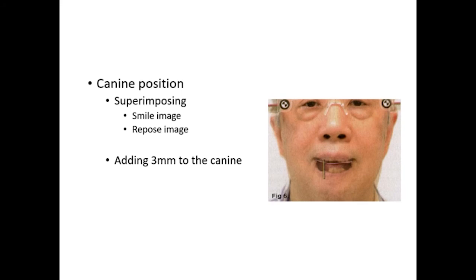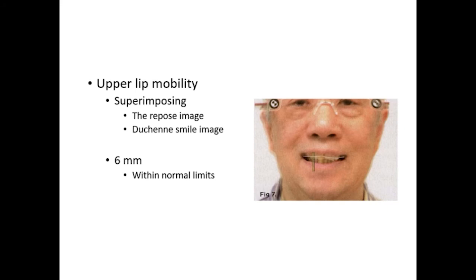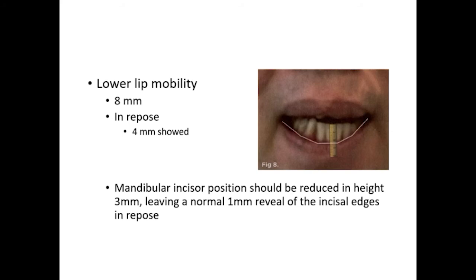Adding 3 mm to the canine would provide an appropriate aesthetic result. The upper lip mobility was measured by superimposing the repose and the U-chain smile photographs and was found to be 6 mm, which is within normal limits. The clinician used video recording of the patient speaking and captured a screenshot with maximum incisal display. Lower lip mobility was measured at 8 mm. The mandibular incisor showed 4 mm in repose; therefore, the clinician determined the mandibular incisor position should be reduced in height by 3 mm, leaving a normal 1 mm reveal of the incisor edges in repose.